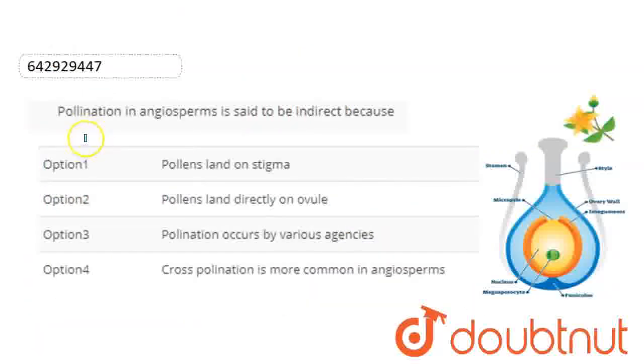Hello students, let's start the question. The question here is: pollination in angiosperms is said to be indirect. Because we have asked why angiosperms' pollination is indirect, and this is what we call indirect pollination.